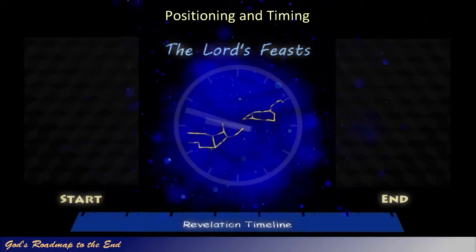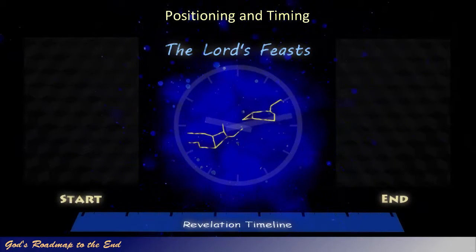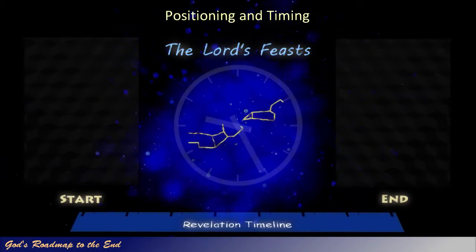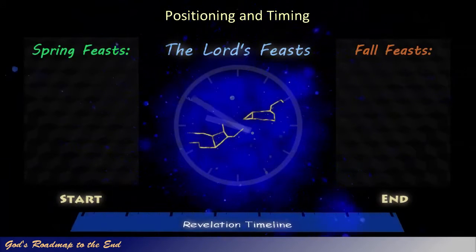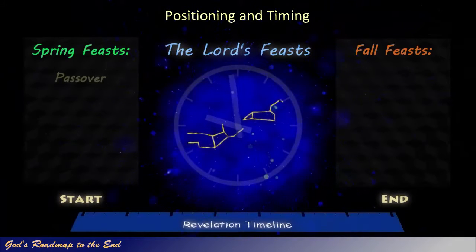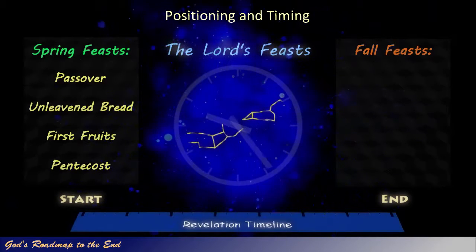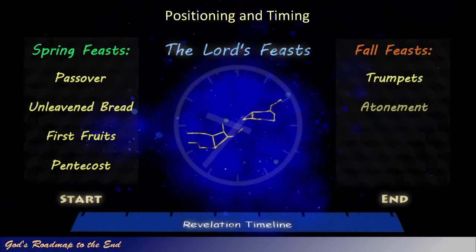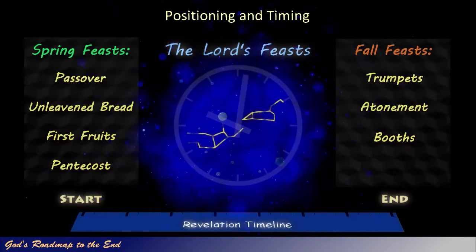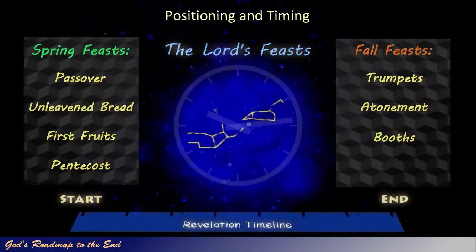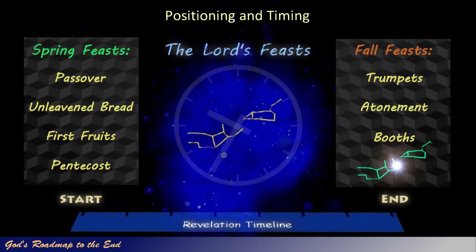There are seven feasts given to Israel to observe perpetually, and these are found in Leviticus 23. They also occur in two distinct seasons, more commonly referred to as the spring and fall feasts. Those that occur in the spring are Passover, Unleavened Bread, First Fruits and Pentecost. The fall season consists of the Feast of Trumpets, the Day of Atonement and the Feast of Booths. We will demonstrate how God makes use of a clearly recognizable pattern applied to both seasons, and how this pattern incorporates the Revelation 12 sign into the fall feasts.